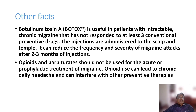Botulinum toxin is a newer treatment useful in patients with intractable chronic migraine that has not responded to at least three conventional preventive drugs. Injections are administered to the scalp and temples and can reduce the frequency and severity of migraine attacks after two to three months. It relieves arterial and muscular spasm.